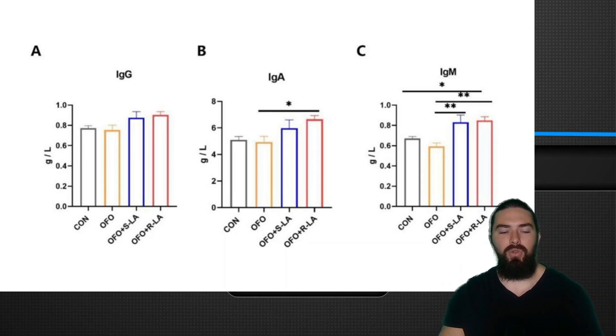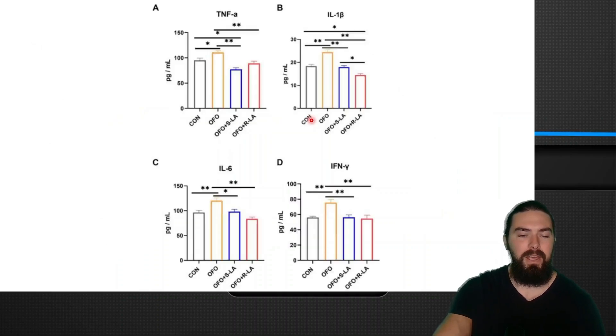They also gave these animals S-lipoic acid and R-lipoic acid to see which one is best for reducing inflammation and overall enhancing health. They gave these animals oxidized fish oil, and these are immunoglobulins that bind to toxins in the body. The oxidized fish oil sometimes lowered some of these markers versus the lipoic acid increased it, with R-lipoic acid being the best. Here are some inflammatory markers like TNF-alpha, interleukin-1-beta, interleukin-6, interferon-gamma, and again you can see that R-lipoic acid is the best in most of these cases at reducing inflammation in the body.